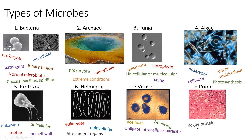Last up are prions, which are just rogue proteins. Within the cell, proteins are the workers — they do all the jobs, and in order to do their job they must have a very specific shape. Prions are relatively new and very mysterious; we're just now really starting to learn a lot about them, so we have way more questions than answers. Because a prion is just a rogue protein, it is considered non-living since it's not made up of cells.